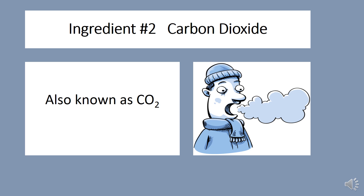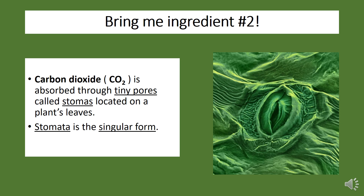Now the plant needs the other two key ingredients. The second ingredient needed is CO2, carbon dioxide. We help supply carbon dioxide when we breathe out. The carbon dioxide is collected in tiny pores of a plant's leaves known as stomas, which is plural for stomata. Stoma, stomata — not exactly the same, but you get the point.